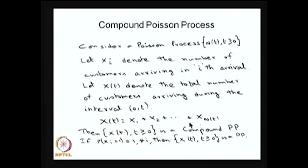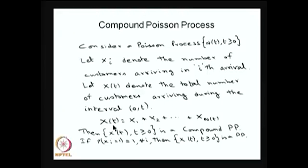The x_i's are independent and identically distributed random variables with some distribution function g, independent of the Poisson process n(t). This is a random sum because the number of terms depends on the value of n(t). The x_i's are independent of n(t), and since they represent the number of customer arrivals at the i-th time point, they are discrete random variables. Therefore X(t) is a discrete-state continuous-time stochastic process, and since we use a Poisson process to build it, it is called a compound Poisson process.